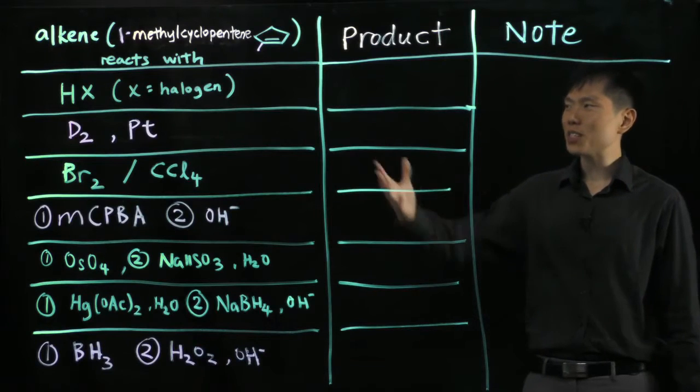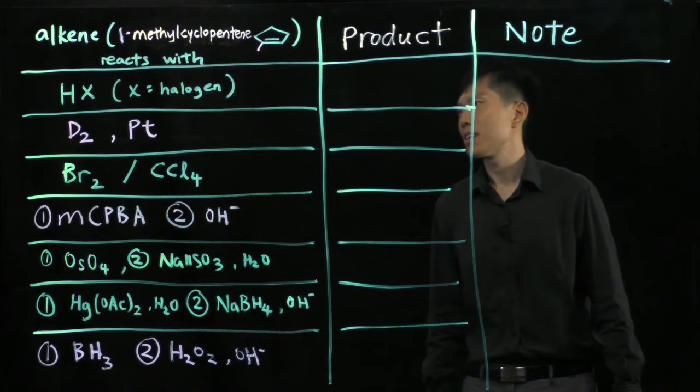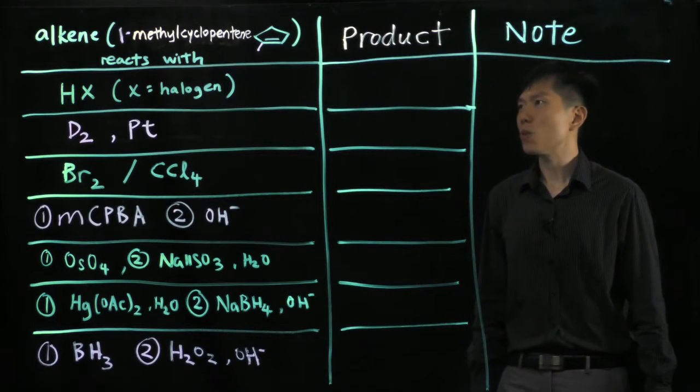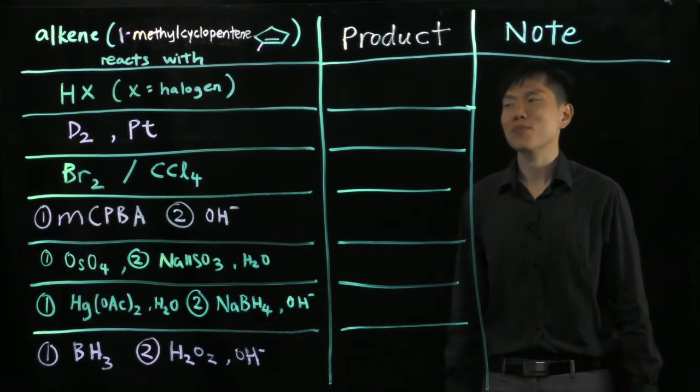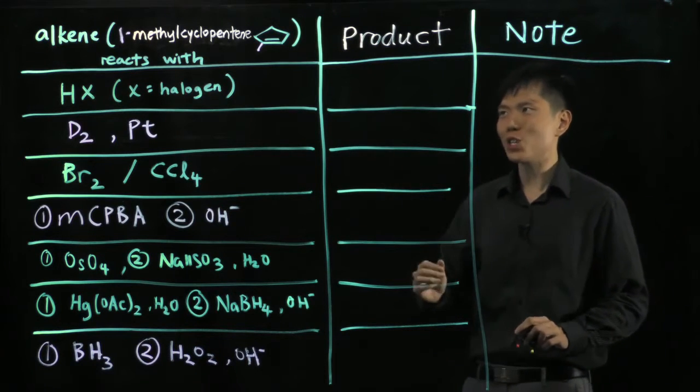Hi guys, so here you see in this table I'm going to show you a summary of the reactions of an alkene. Now in this example I'll be using 1-methyl cyclopentene to illustrate some of these certain things we have to realize when you react different reagents.